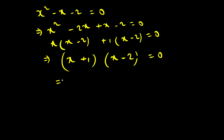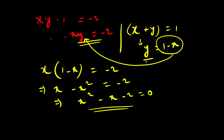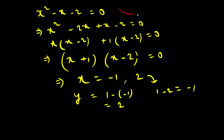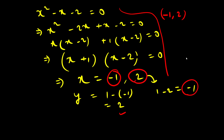From (x + 1)(x - 2) = 0, we get x = -1 and x = 2. Now to find the corresponding y values, I use y = 1 - x. For x = -1: y = 1 - (-1) = 2. For x = 2: y = 1 - 2 = -1. So we got two solutions: (-1, 2) and (2, -1).